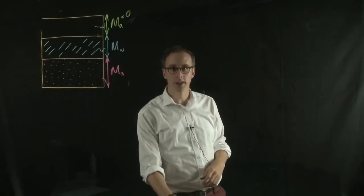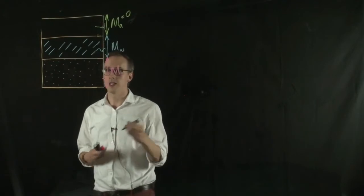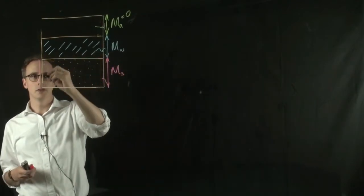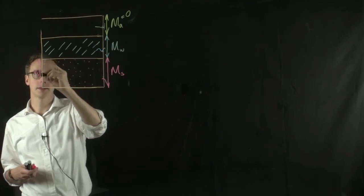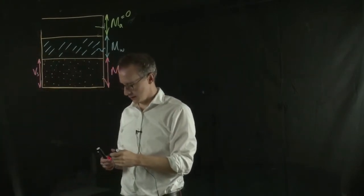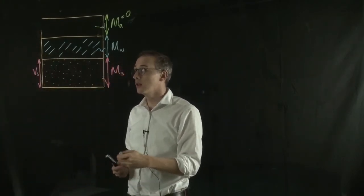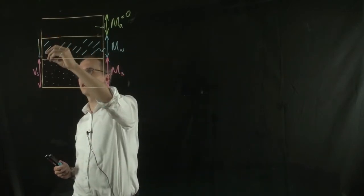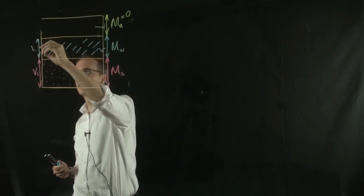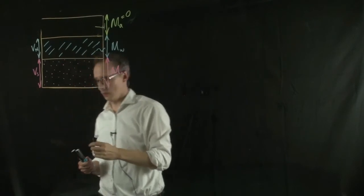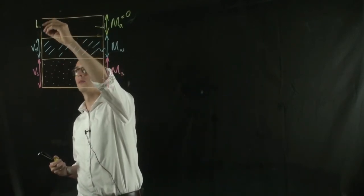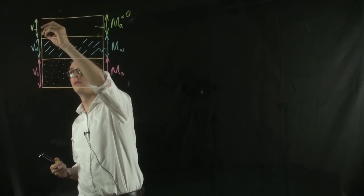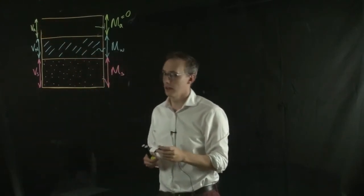Okay, so they have a mass. We can also describe their volume. So the solid has a volume, volume S, or the volume of the solid. The liquid has a volume, VW, the volume of water. And the air has a volume, the volume of the air.